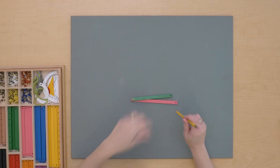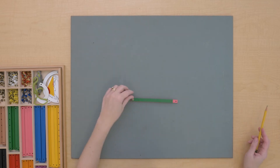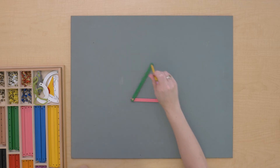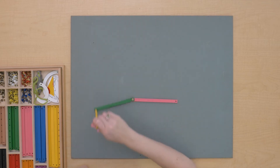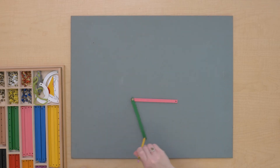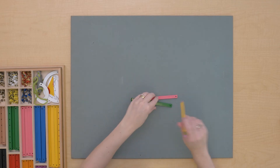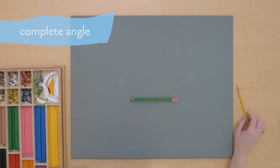And this is an angle. When we go all the way around like this, it's called a complete angle.